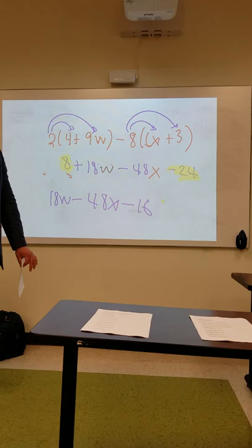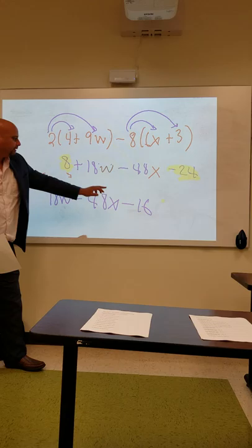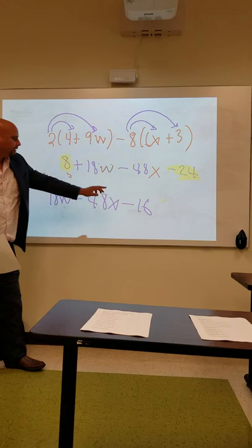Take the sign of the higher number. The higher number is 24, and the sign is negative. 24 minus 8 is negative 16. We put w first alphabetically: 18w minus 48x minus 16. That's your answer.